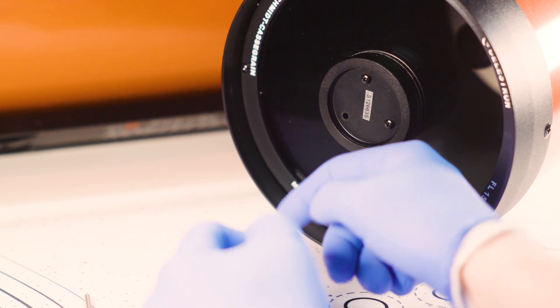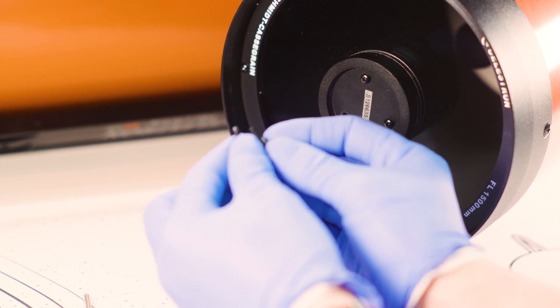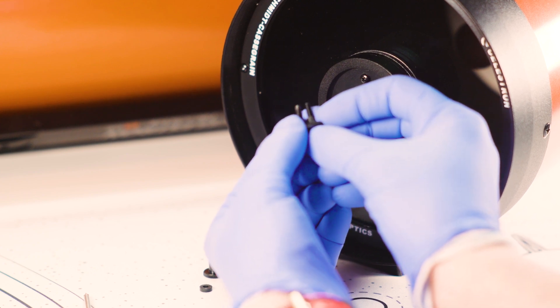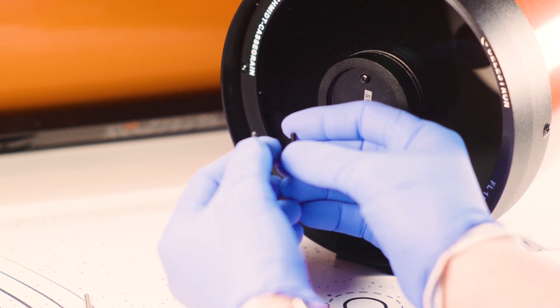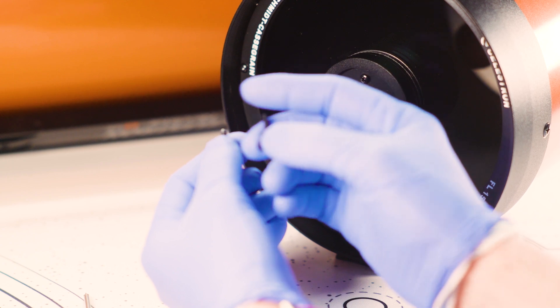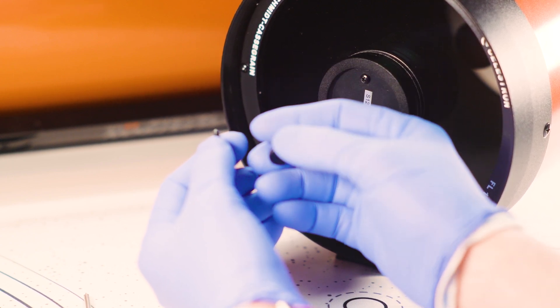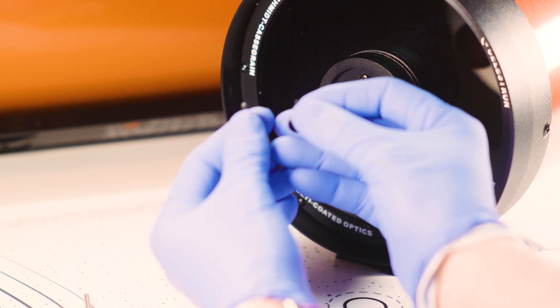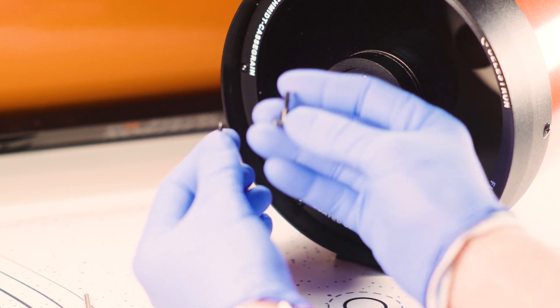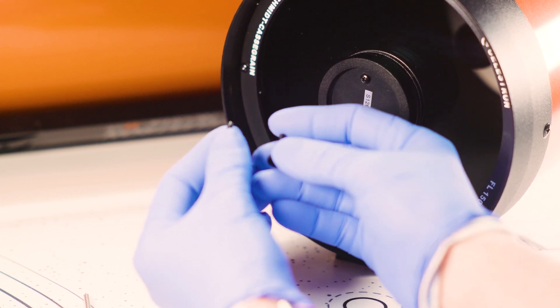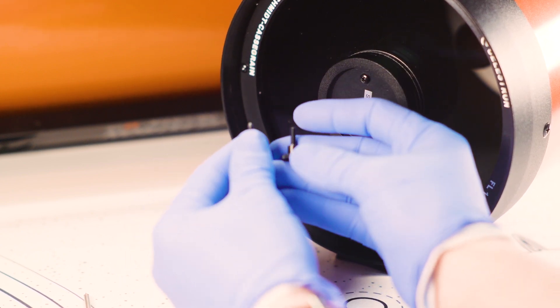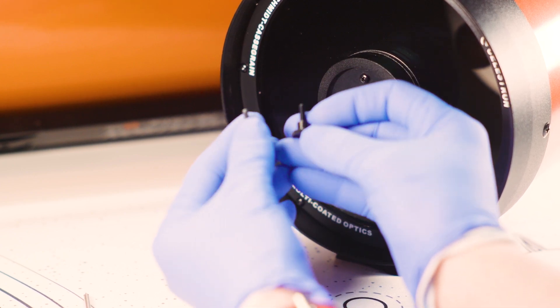Now before we continue, the one thing that we want to do is compare these two threads together and compare the length of the screws themselves. Now if you'll recall earlier we talked about how this is designed for the most current models of the 5, 6, and 8 inch SCTs in the SE Evolution and XLT lines and that's because those use metric threads. Older models and Edge HD models use a different standard so these won't work. But even if you do have a 6 SE or similar type scope that we have listed out you still want to double check that these are the same just in case there's been a revision in the interim.